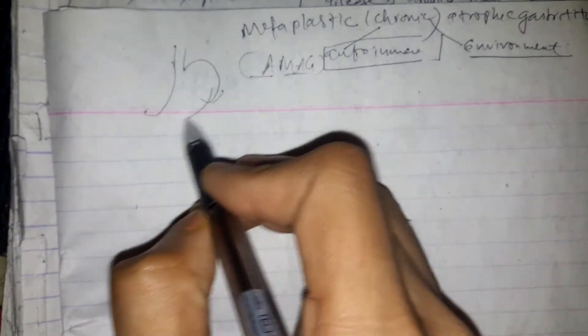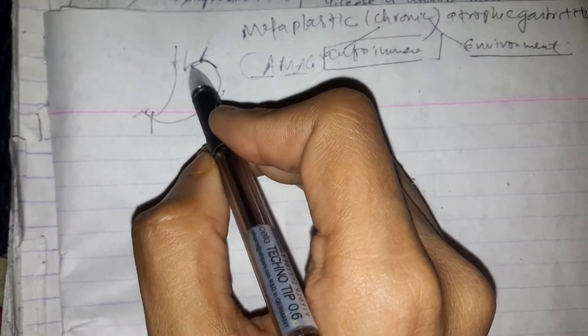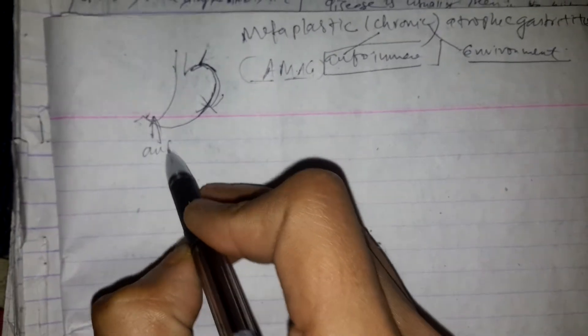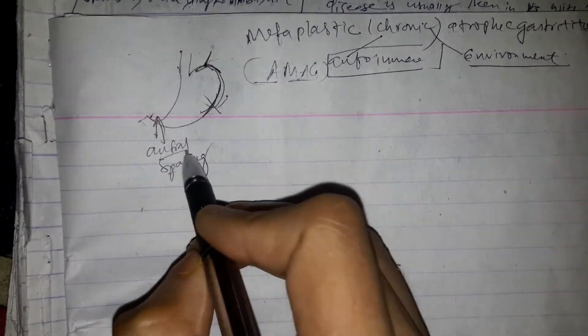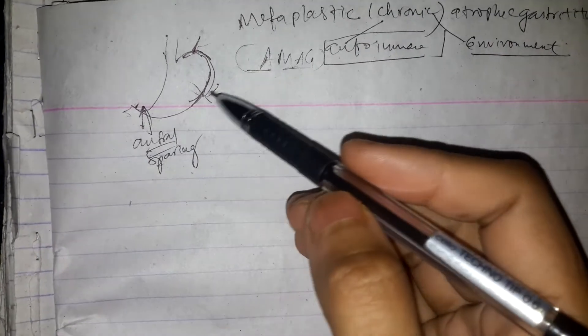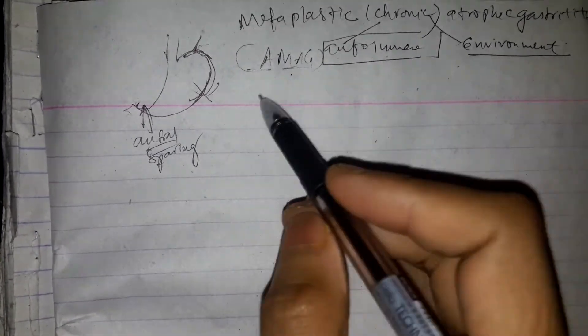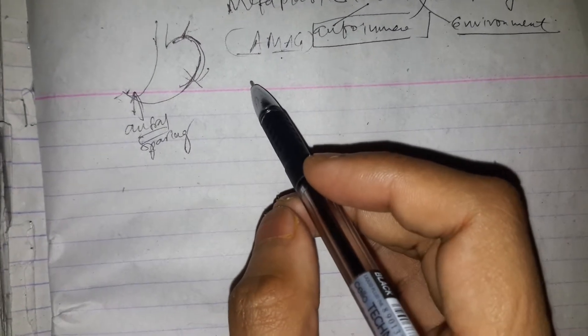The corpus, antrum, and fundus are the key regions. Changes are mainly seen in the fundus and corpus, and there is antral sparing. The antrum is involved in H. pylori-induced gastritis. This is how autoimmune metaplastic gastritis differs from H. pylori-induced gastritis.